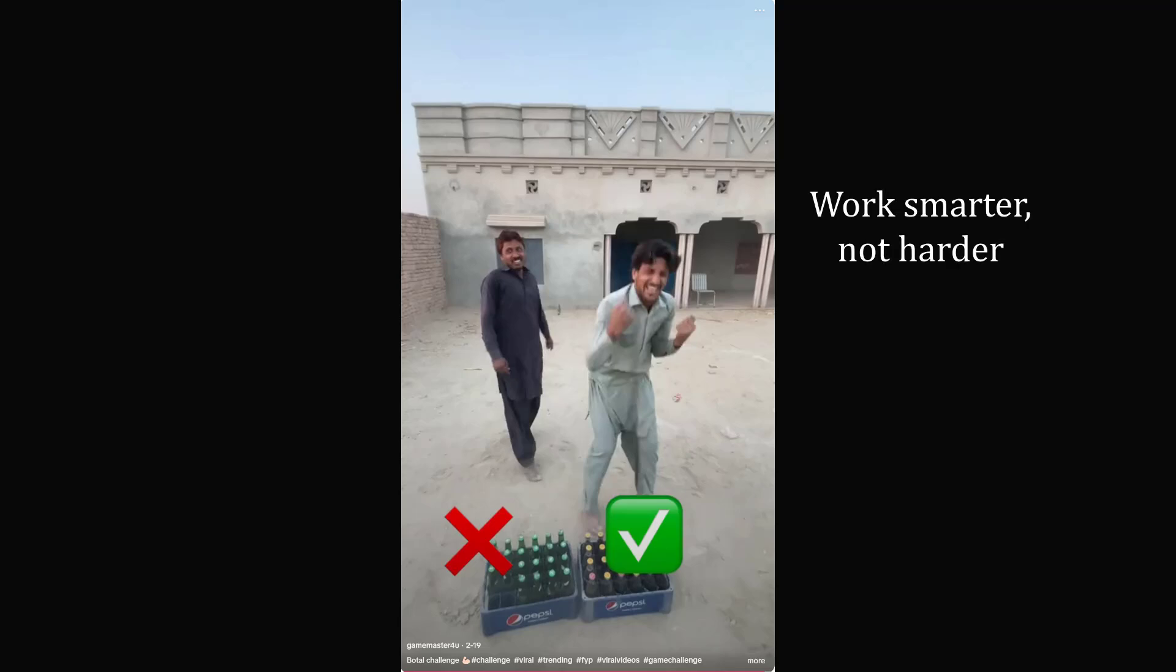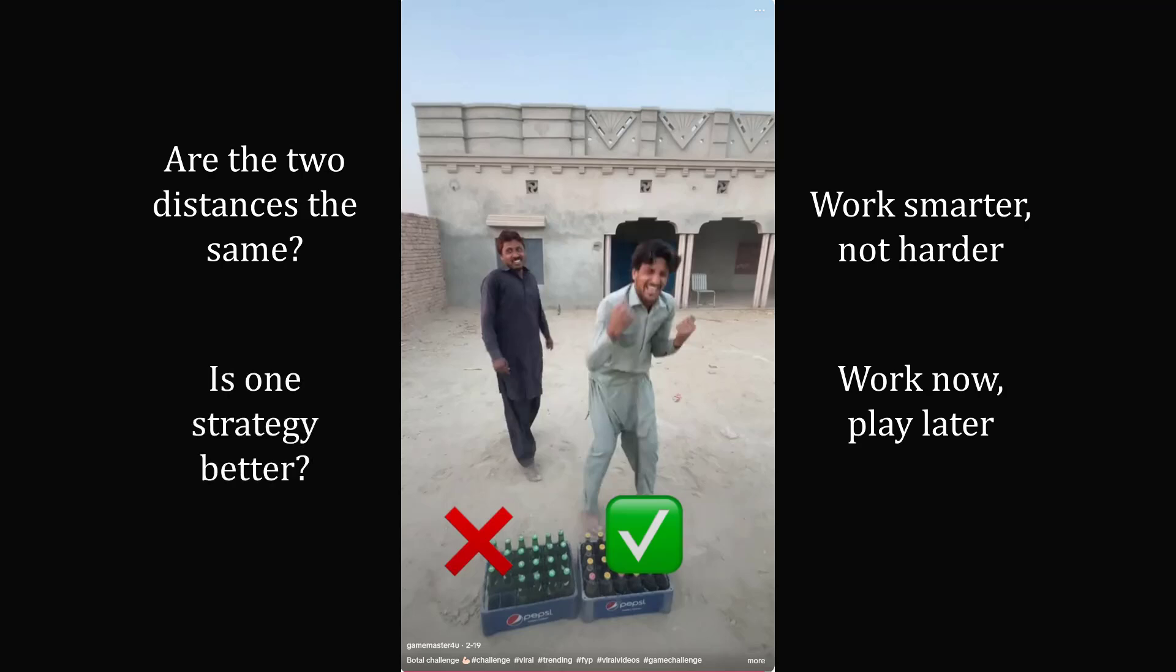The come-from-behind victory is wildly satisfying, and many people commented with things like, you should work smarter, not harder, or it's important to work now and play later. But some people have had a more logical approach. They have wondered, are the two distances actually the same between the two people, and is there actually any difference between the two strategies, or is it the case that the person on the right is simply faster? These are questions we can analyze mathematically.